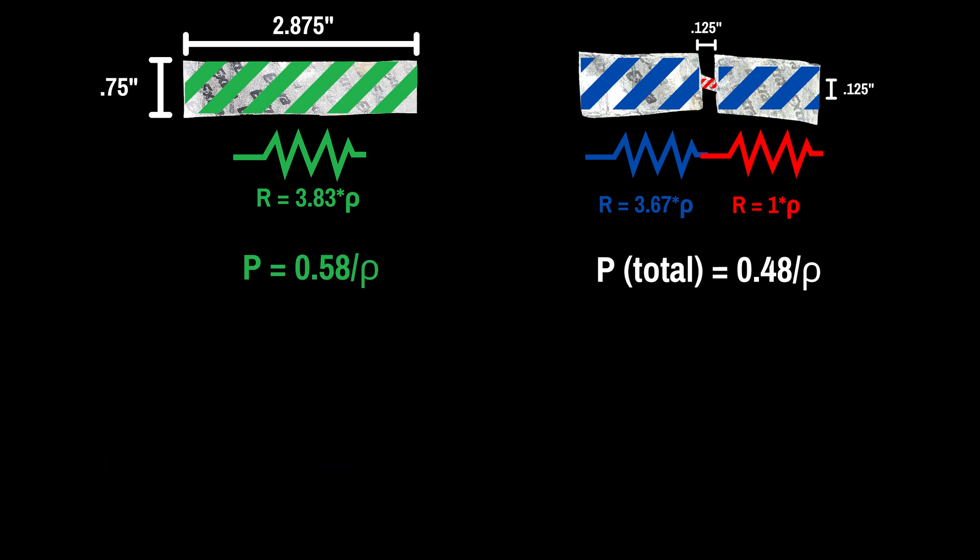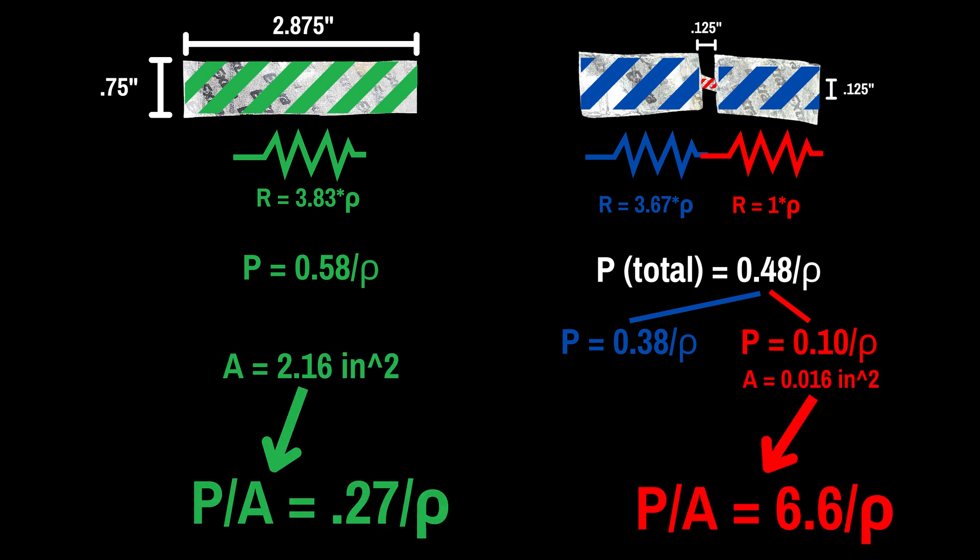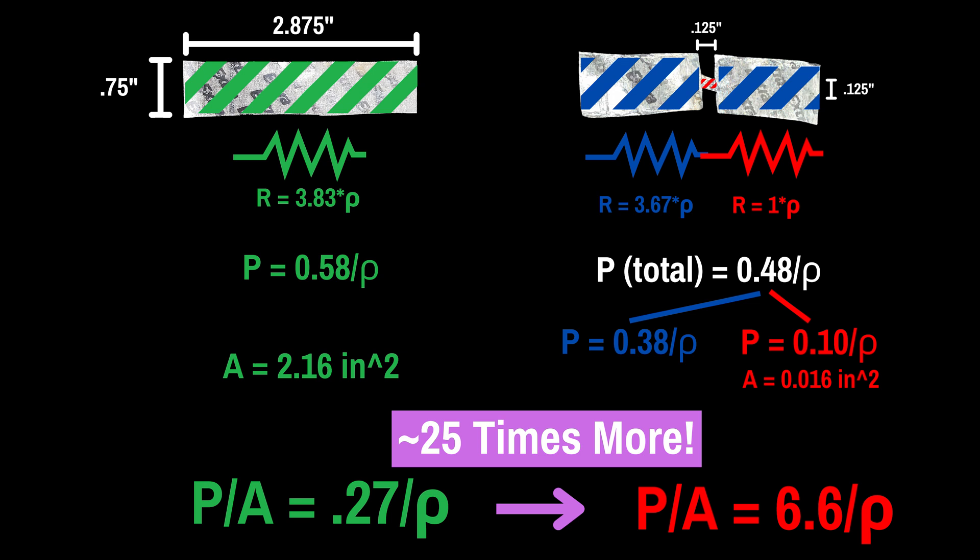But the real answer as to why it gets hotter is by looking at how much of that smaller total power is consumed just by the skinny section. If you divide by the surface area to see how concentrated that power consumption is, you can see that it's 25 times more concentrated in that small middle section for this example.